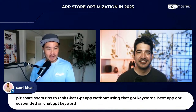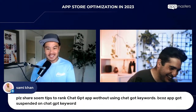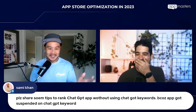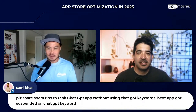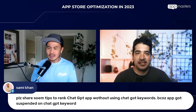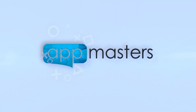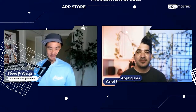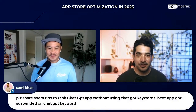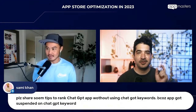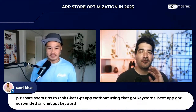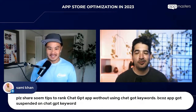Sammy asks for tips to rank a ChatGPT app without using 'ChatGPT' because his app got suspended. You can't use 'ChatGPT' as a single combined word in your app name — it has to be two separate words. I get this question far more than anyone would believe.